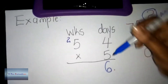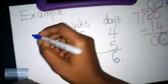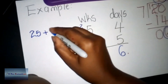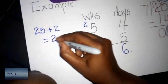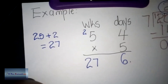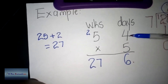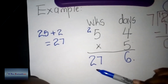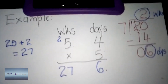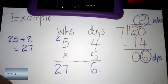Now five multiplied by five is 25, and 25 plus two is equal to 27. So I write 27 in the weeks column. Five weeks and four days multiplied by five gives us 27 weeks and six days. Now go ahead and try the rest on your own!